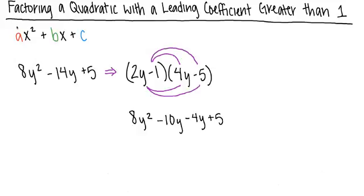When we multiply our factors together, we get 8y squared minus 10y minus 4y plus 5.